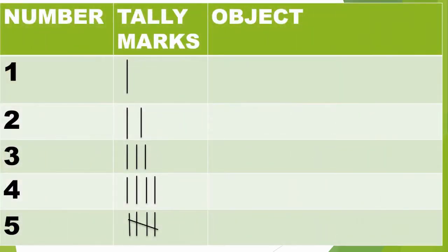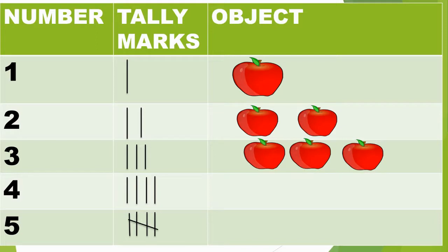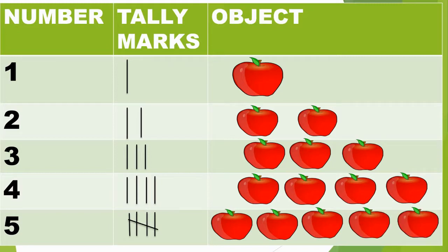Students, tally marks represent a count of objects. Number 1 represents 1 tally mark — that means 1 apple. Number 2 represents 2 tally marks — that means 2 apples. Number 3 represents 3 tally marks — 3 apples. Number 4 represents 4 tally marks — 4 apples. Number 5 represents 5 tally marks — 5 apples.